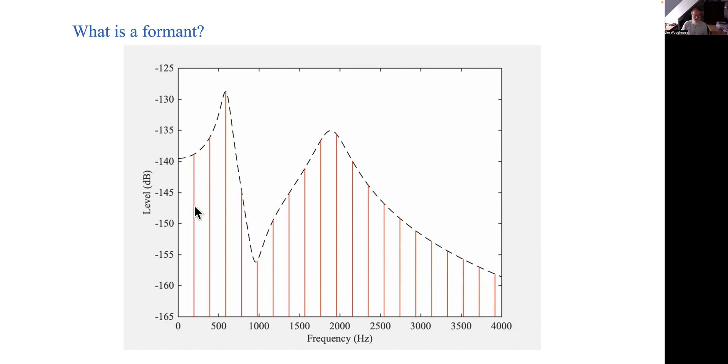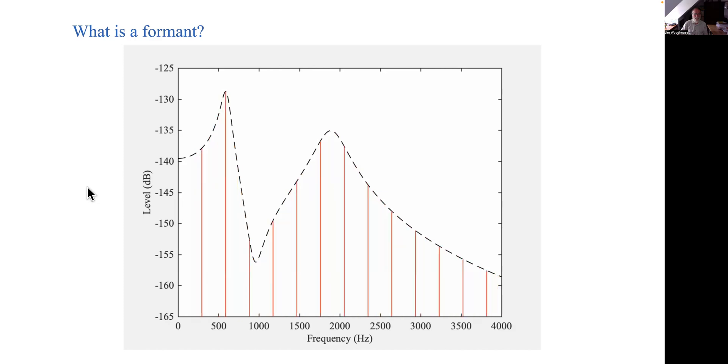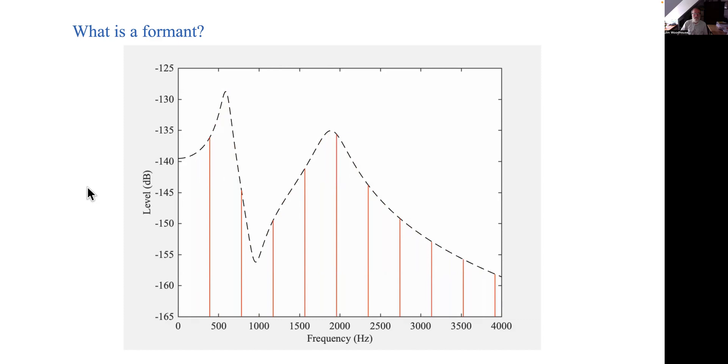The red lines are the harmonics of the note that you're singing. Now I'm going to run the animation here and what the animation will show is how those red lines change as the singer sings a chromatic scale going up one octave starting at the note you have here and ending up an octave higher.